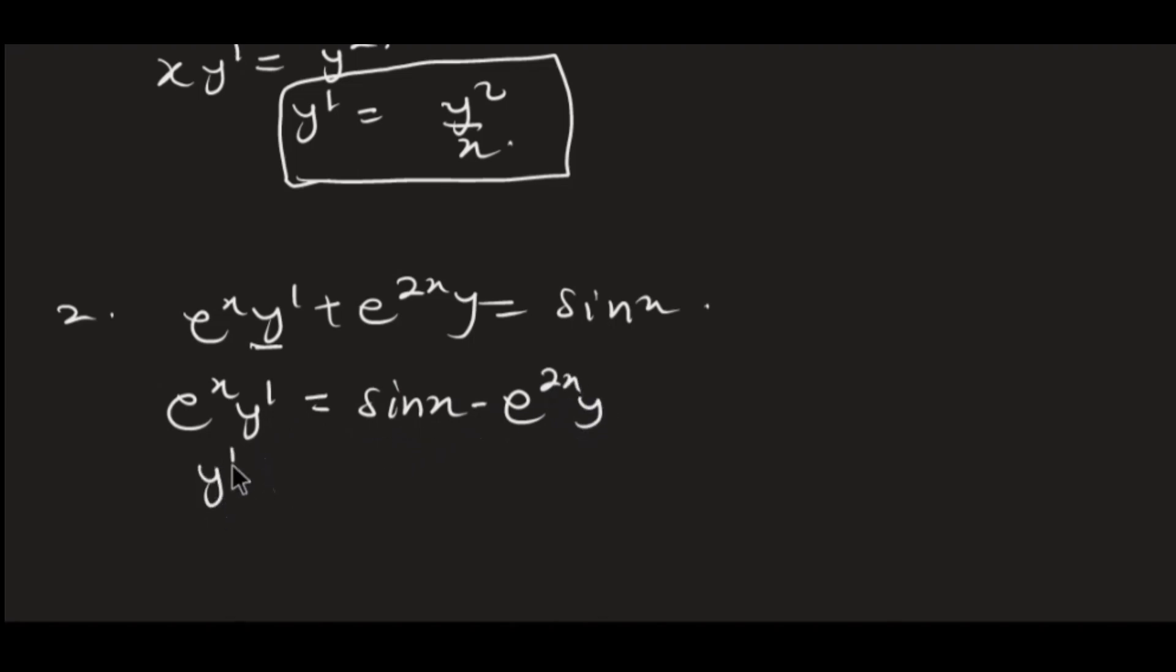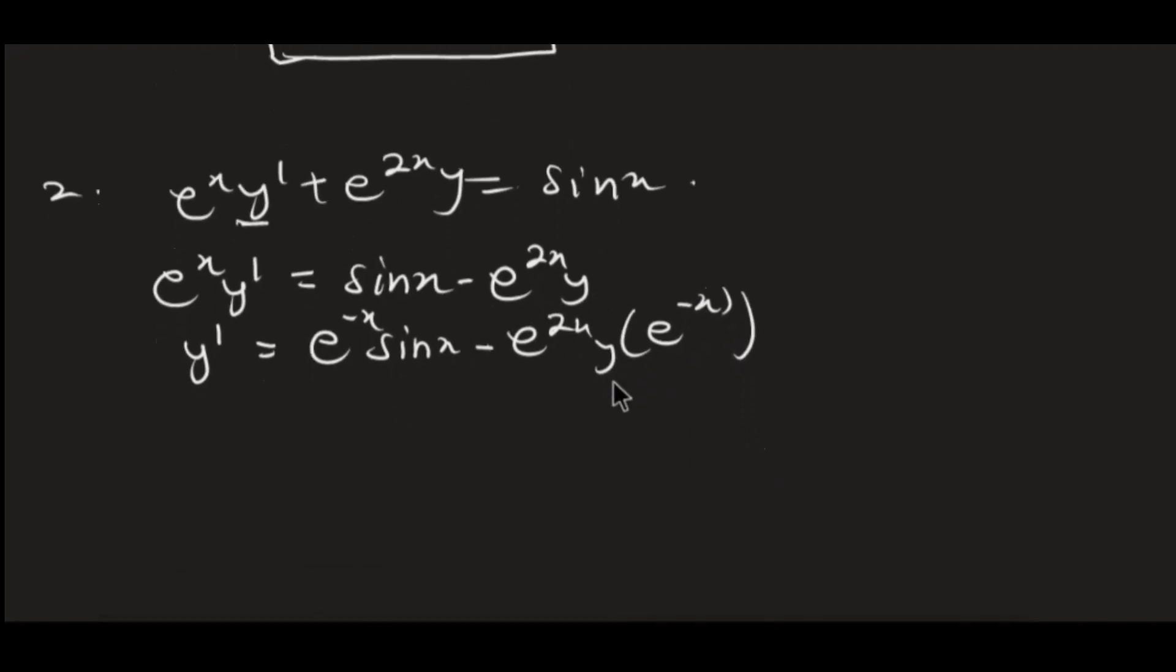Hence, I will get e^(-x) multiplying sin x minus e^(2x)y multiplying e^(-x). So this is the standard form. Making your y' the subject and putting it on the left side, you are good to go.